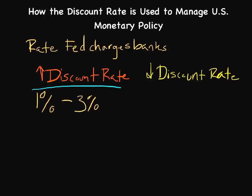If the Fed did want to increase the discount rate, it would decrease the likelihood that banks would want to get that loan and loan money out to consumers. It would do that under circumstances where it was concerned about inflation — which is simply the increase in the prices of goods and services without an accompanied increase in wages. Essentially, things cost more but you make the same amount of money, and as a result your purchasing power decreases over time.